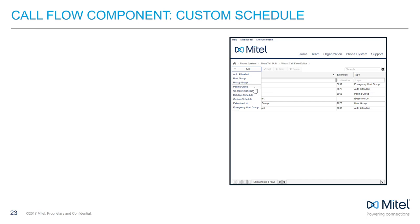Custom schedules override both holiday and on-hour schedules for the date and time scheduled. There are several reasons to use the custom schedule — it can be utilized to take a certain portion of a day off, or to define custom hours that may affect only certain days out of the year. For example, on the first of the month you may not open until later in the day.